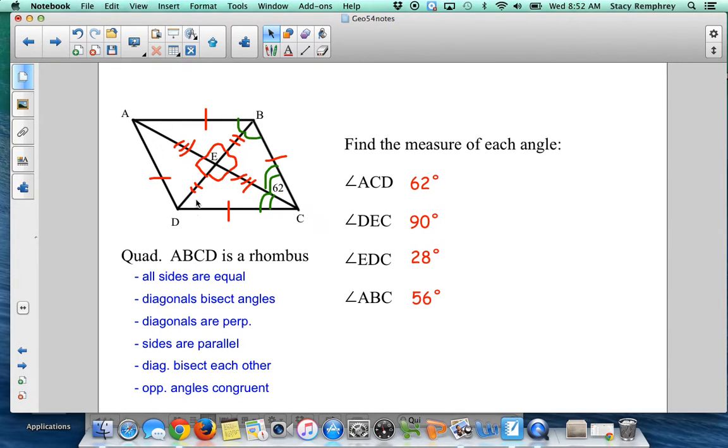And for angle ABC, well, if this is 28, so is that by alternate interiors. These are congruent. So that's another 28. 28 times 2 makes angle ABC 56 degrees. You could have done that in a different way too, but that was one way to do it.